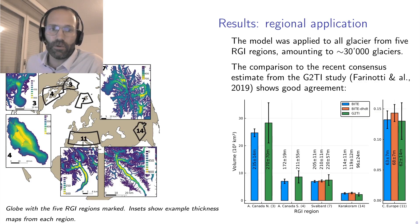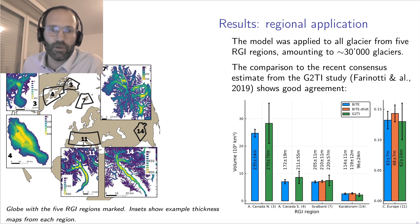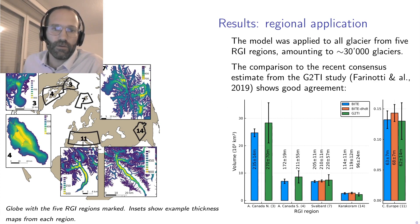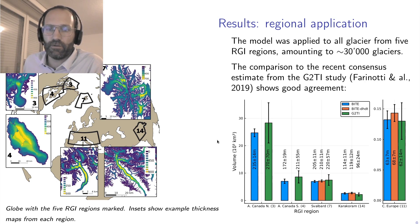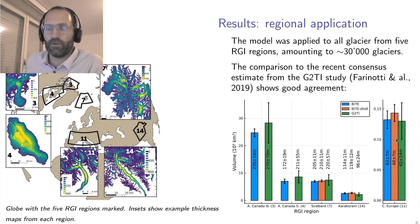We went and applied this model to 30,000 glaciers from around the world. To put this in context, there are approximately 200,000 glaciers on Earth, so we modeled a good chunk of them. We did this in Arctic Canada, Svalbard, the Alps, and the Karakorum. Here are maps of example glaciers such as Greater Ledge Gletscher and Barnes Ice Cap. We compared the volumes calculated with those from a recent community study, the G2TI study, and generally our results compare well to that community study.